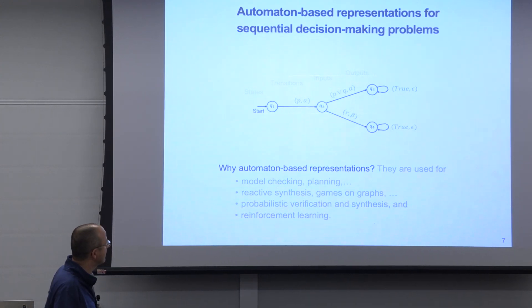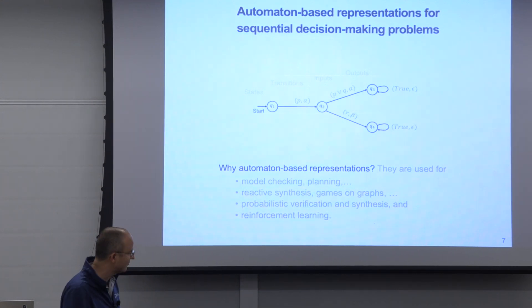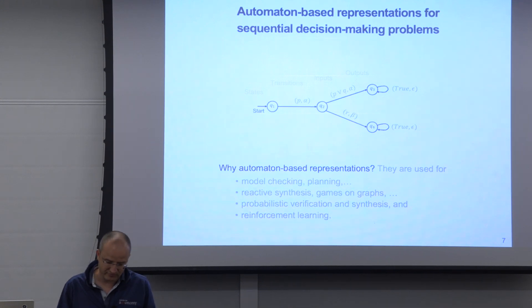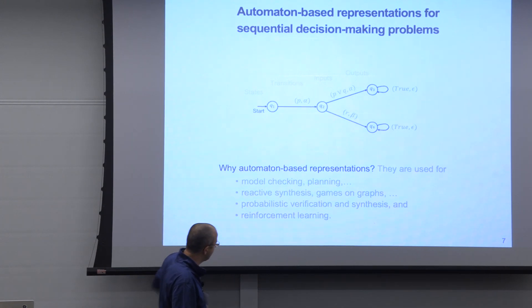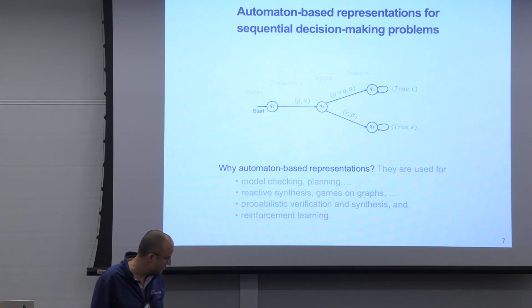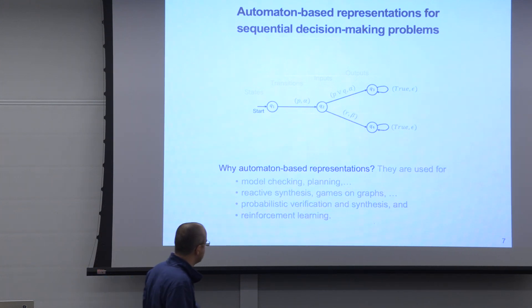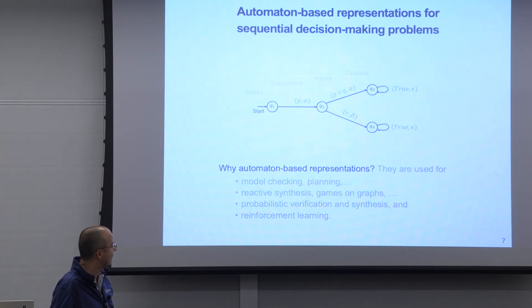We decided to encode extracted knowledge in finite state automata. There is a vast range of different types of automata, but the point is that it is a finite state object with a certain level of expressivity that we can handle in formal verification. Similar objects have been used in formal verification, design and synthesis of software and hardware, probabilistic settings, and more recently in reinforcement learning to expedite the learning process and improve generalizability.